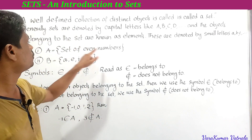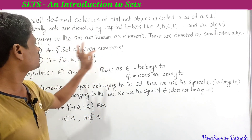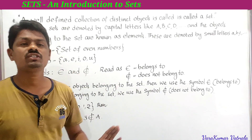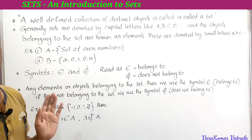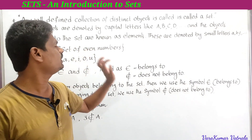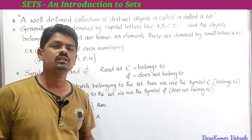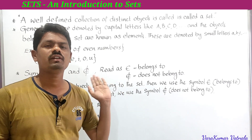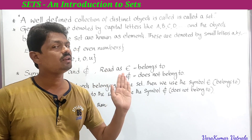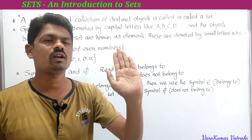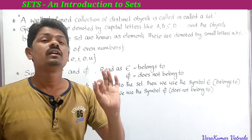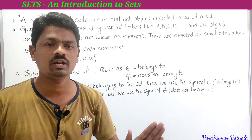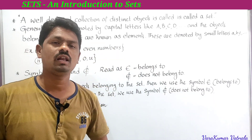Now let's understand the definition more clearly. 'Well-defined' means: suppose the statement is 'set of all even numbers.' The even numbers are 2, 4, 6, 8, and so on — we can state the elements very clearly. If anyone names any element, we can say whether it belongs to the set or not. The elements should be universally agreed upon.